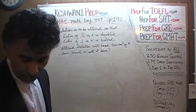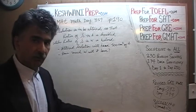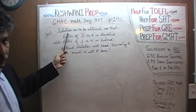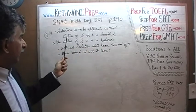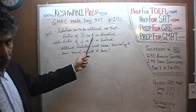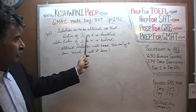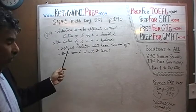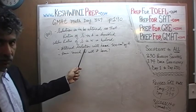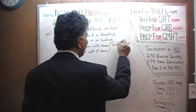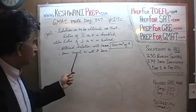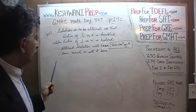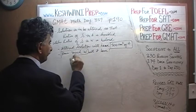The problem is already on the blackboard. We have a solution which contains three things: soap, alcohol, and water. The solution is to be altered so that the ratio of soap to alcohol is doubled, and at the same time the ratio of soap to water is halved. Another condition is that the altered solution must contain 100 cubic centimeters of alcohol. The question is: how much water will the final solution have?